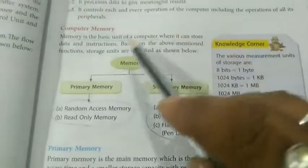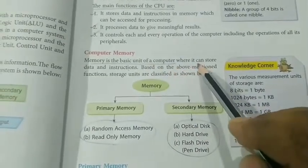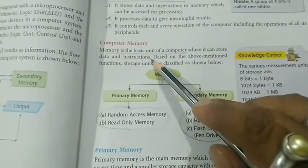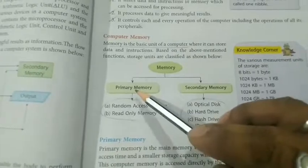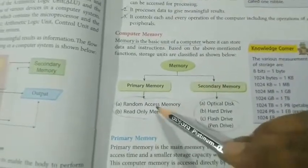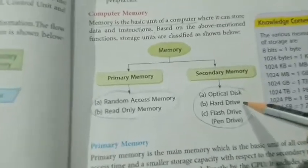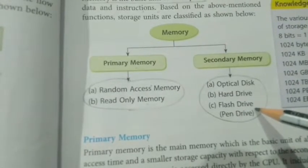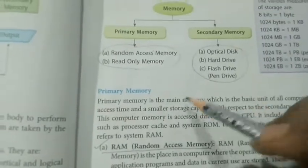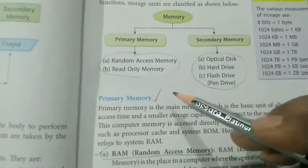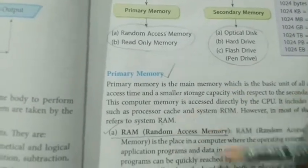The next topic is computer memory. Memory is the basic unit of a computer where data and instructions are stored for future reference. Memory is divided into two types: primary memory and secondary memory. Primary memory refers to RAM and ROM, while secondary memory refers to optical disks, hard drives, flash drives, or pen drives.